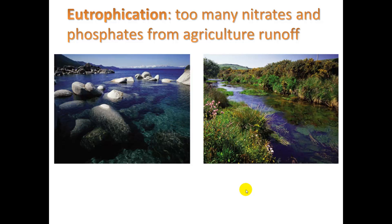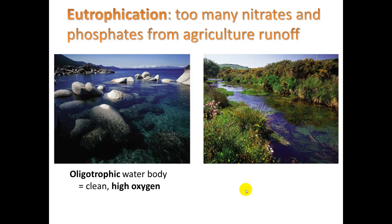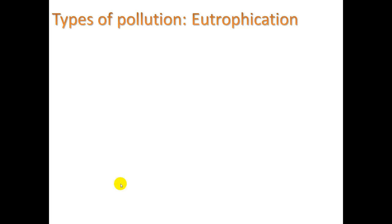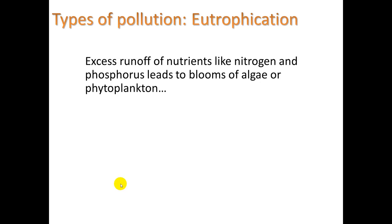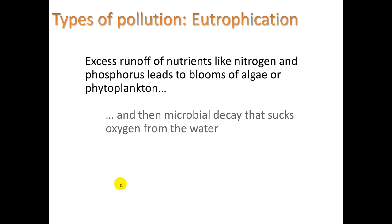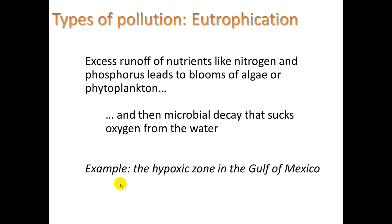Eutrophication means there are too many nitrates and phosphates from agricultural runoff. A water body that is oligotrophic has low nutrients — low nitrates and phosphates — which allows high oxygen content. A eutrophic water body is polluted, has excess nutrients, and will have low oxygen. You get runoff of nutrients, algae blooms and phytoplankton blooms, and then those materials die, leading to microbial decay that sucks oxygen from the water. An example is the hypoxic dead zone in the Gulf of Mexico.